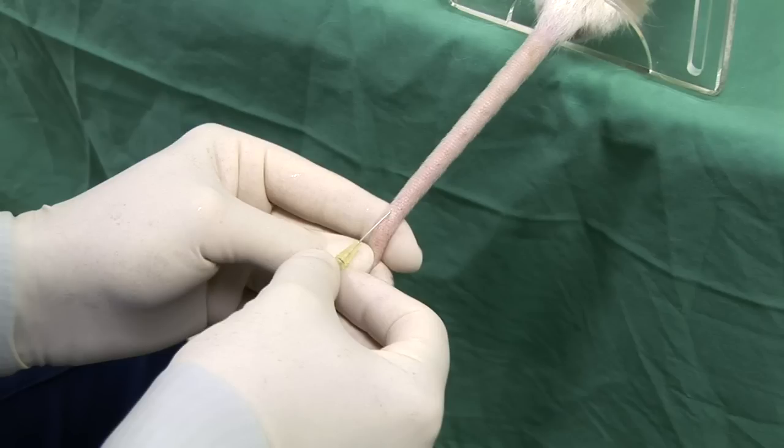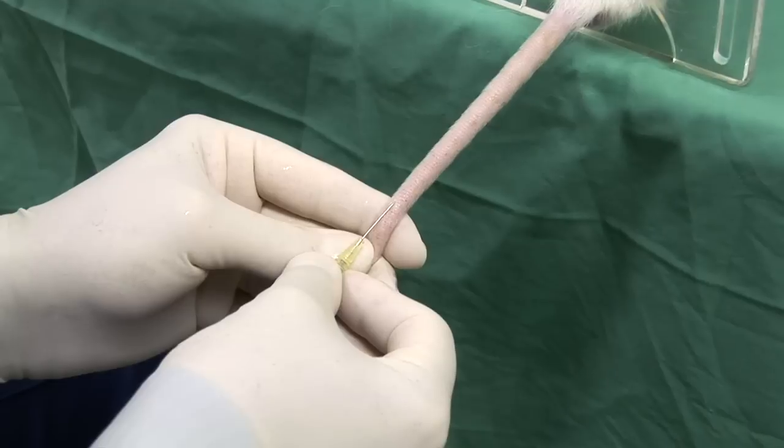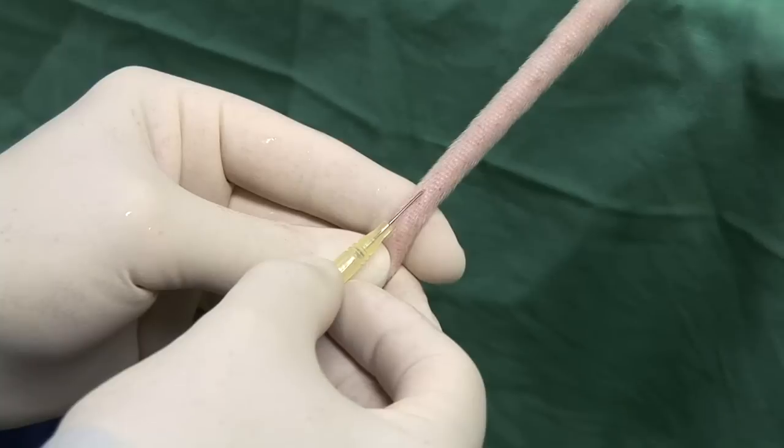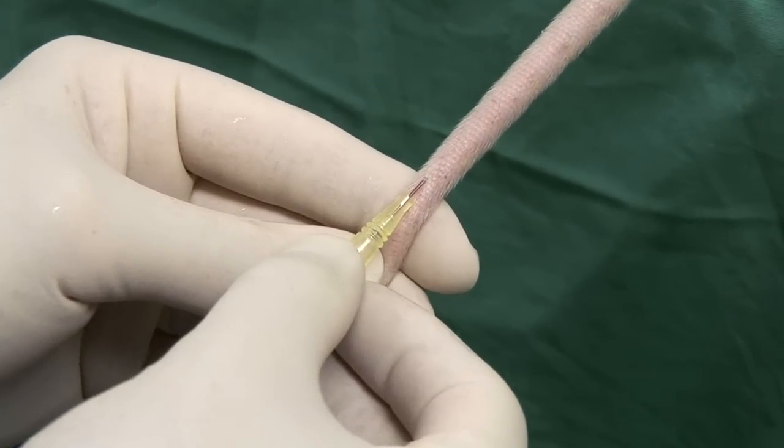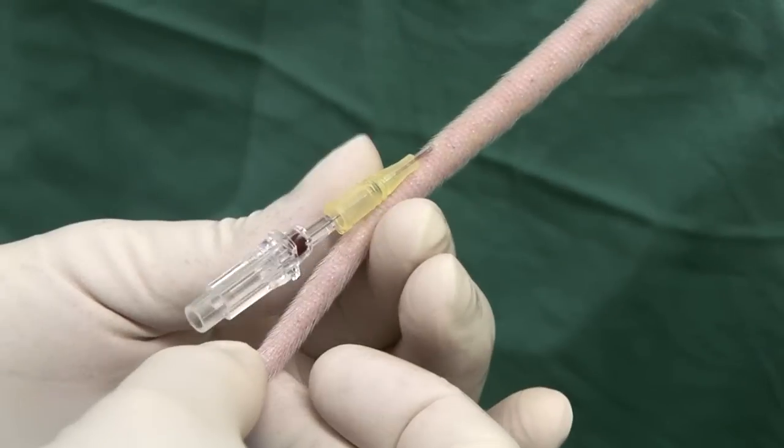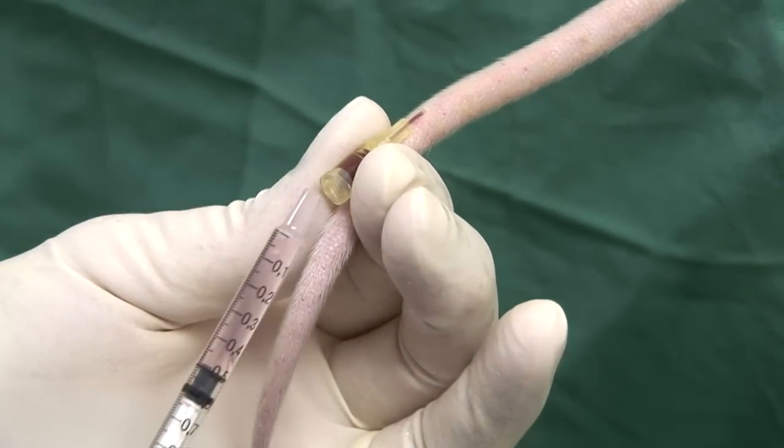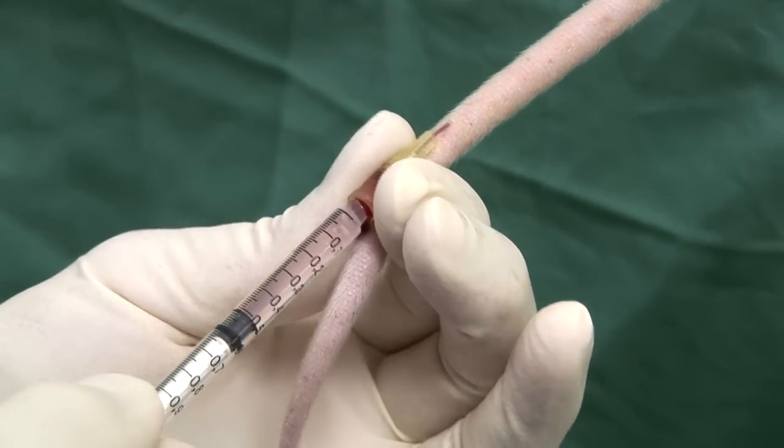When using a catheter, successful venipuncture is usually confirmed by the presence of blood in the catheter lumen and this is seen as the introducer needle is withdrawn. After confirming correct placement, the introducer needle is withdrawn and the catheter advanced until it is almost completely within the vein.